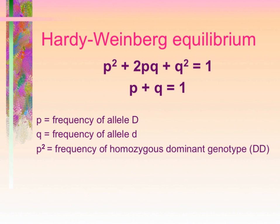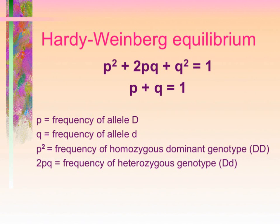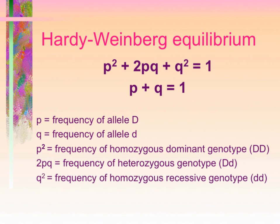p² is the frequency of the homozygous dominant genotype (DD). If the frequency of allele D is squared, that gives us the DD genotype — that is p² in the Hardy-Weinberg equation. The 2pq is the frequency of the heterozygous genotype. Why 2pq? Because the dominant allele D in a heterozygous individual could have come from dad while the recessive d came from mom, or vice versa — so there are two heterozygous genotypes, as in the Punnett square.